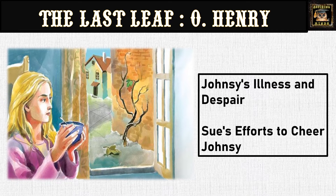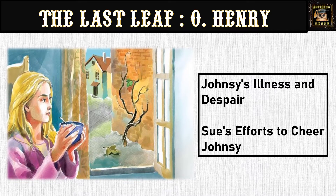Now let's see what's in store in the story. Johnsy is seriously ill with pneumonia. She is convinced that there is an ivy creeper just opposite her house that she can see from the window, and it is losing leaves. She believes that when the last leaf falls, she is going to die. Sue engages in various attempts to distract her friend from thinking about these thoughts about life's end, but despite her efforts, Johnsy remains stuck in that thought process of the falling leaves.